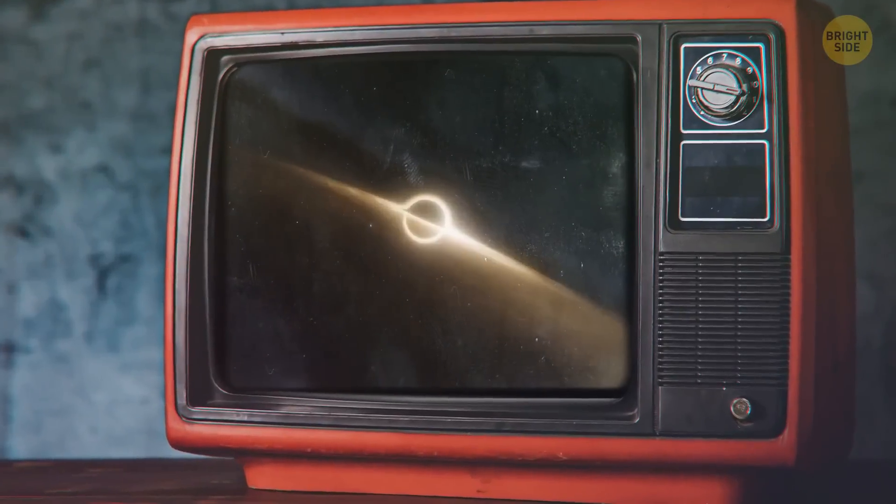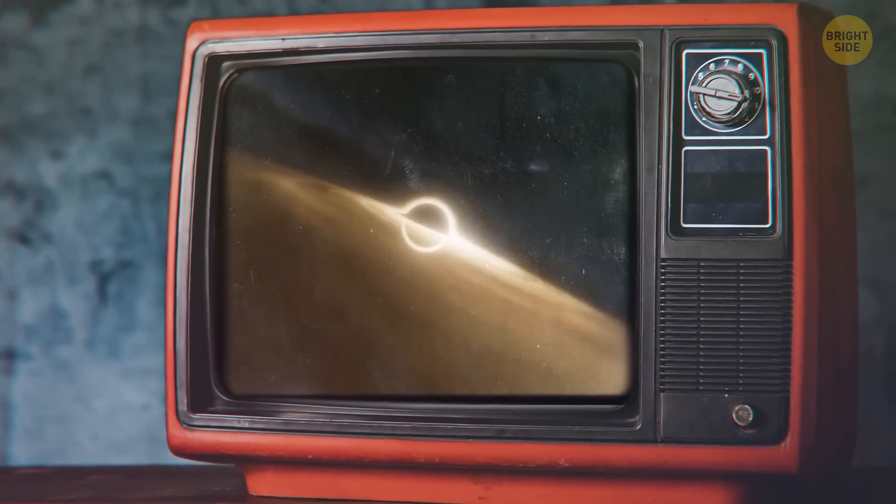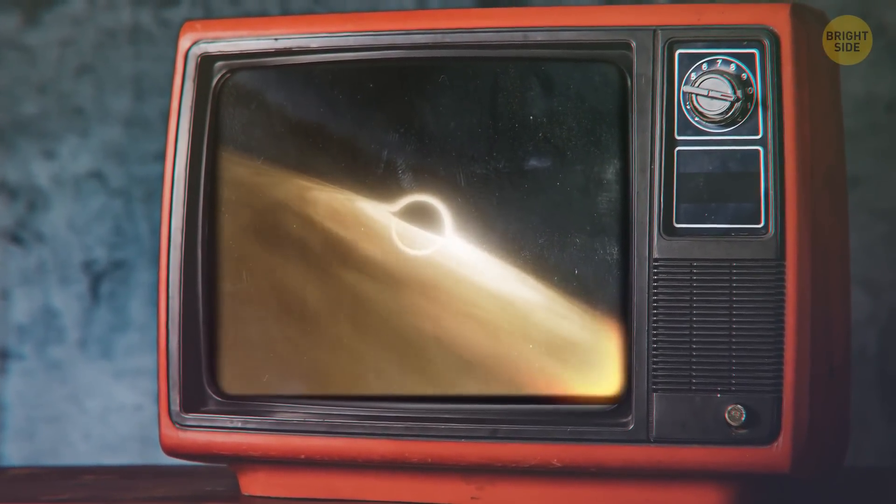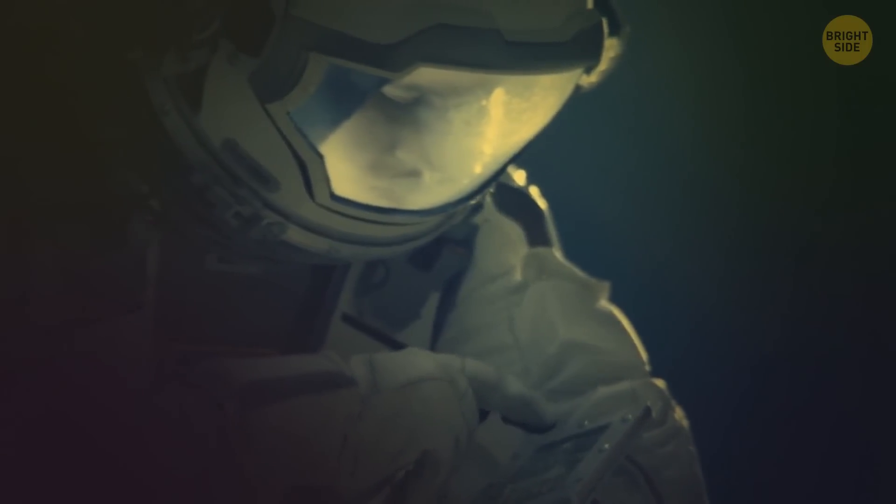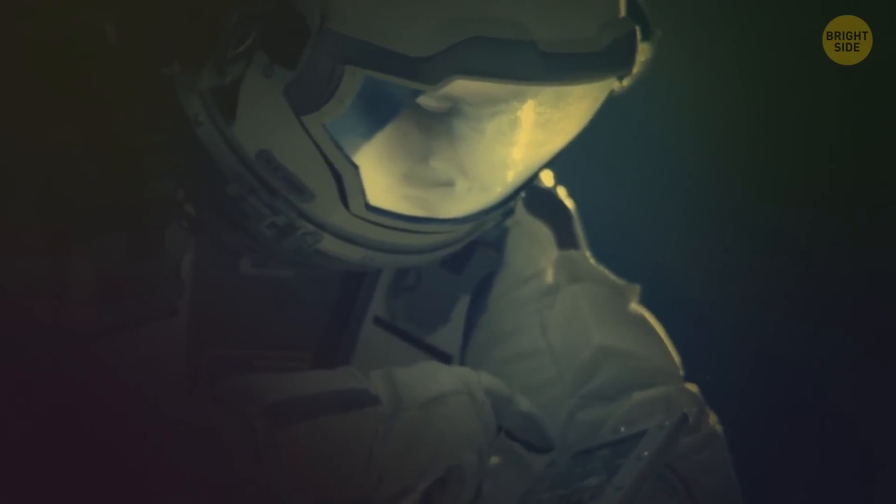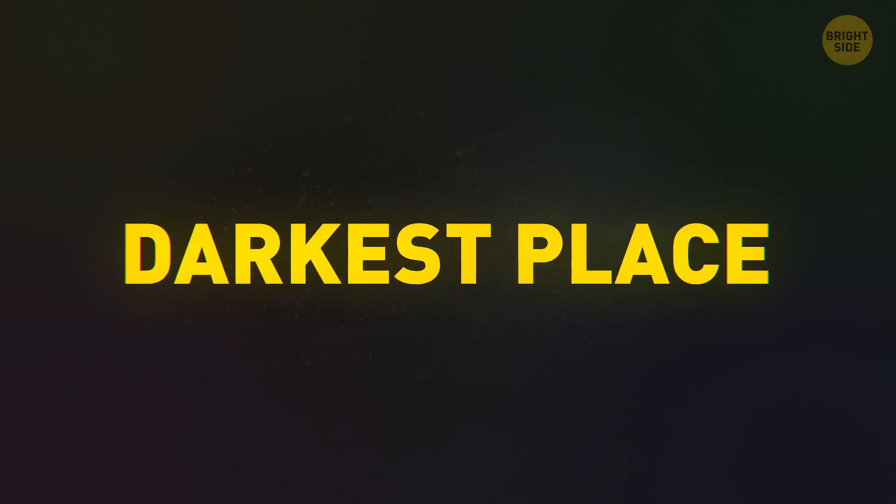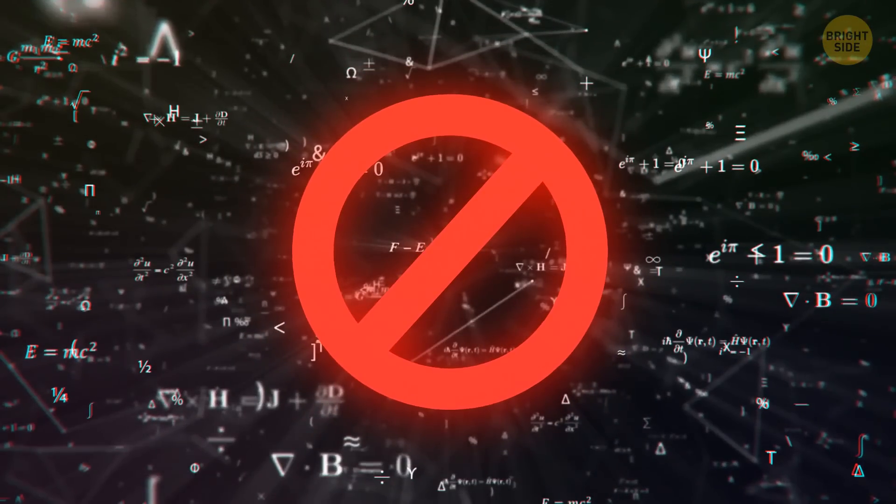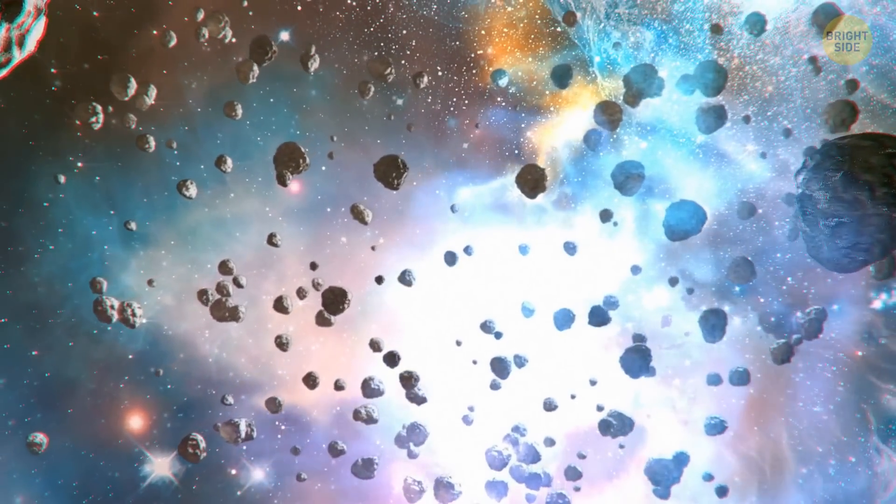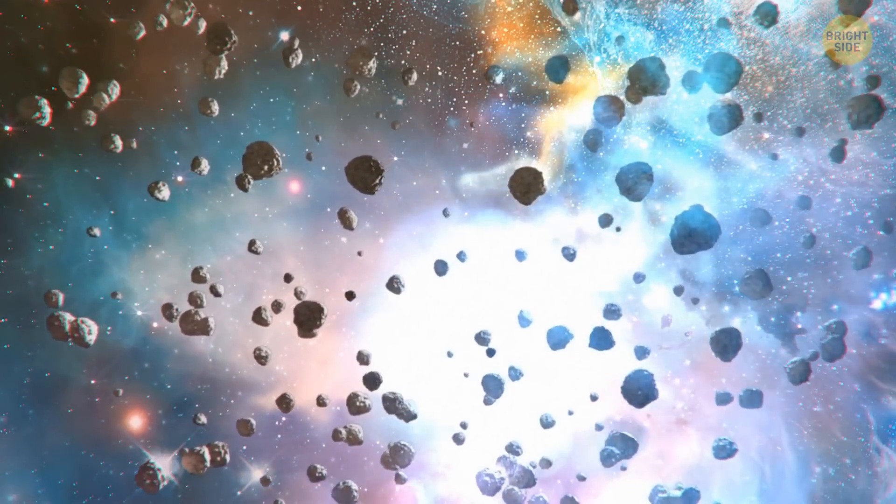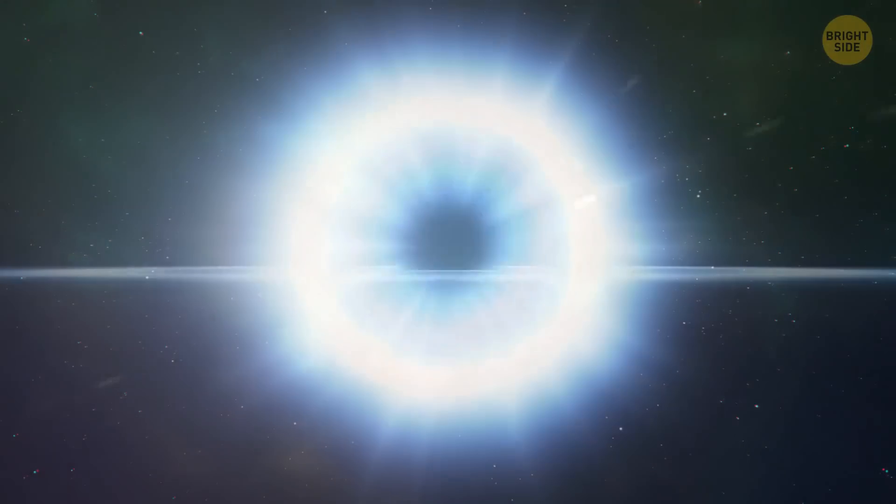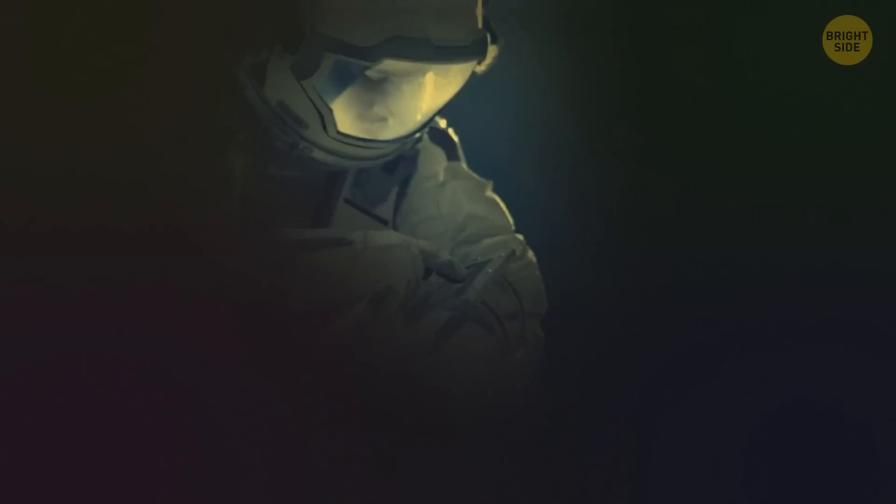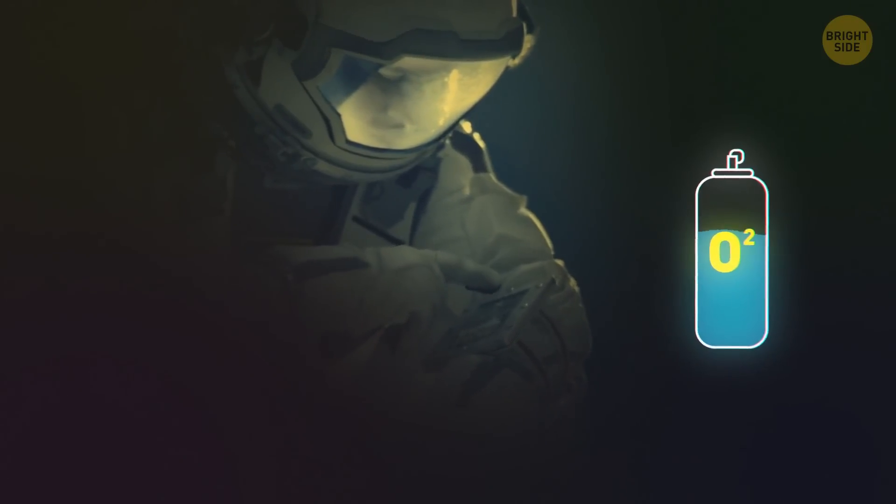You have front-row seats, but the view is not that impressive. This is the darkest place you've ever been to. Even the usual laws of physics just stop working here. Theoretically, time goes by so slowly here that your home planet could no longer exist. And a new black hole could appear in place of our Sun. But you will live exactly as long as there's enough oxygen in your suit.